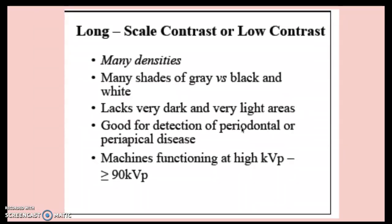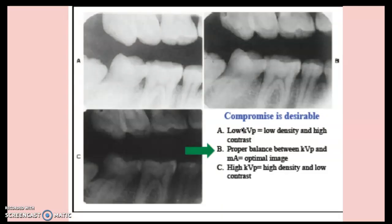Long scale, or low contrast, has many densities with lots of shades of gray. It's good for detection of periodontal or periapical disease and functions at high kVp, greater than or equal to 90 kVp. We want a proper balance between kVp and mA for the optimal image — not too light, not too dark, but just right.